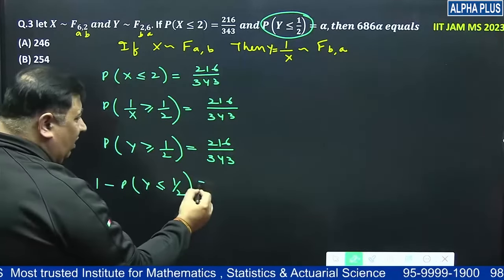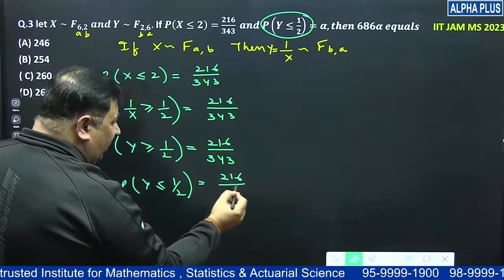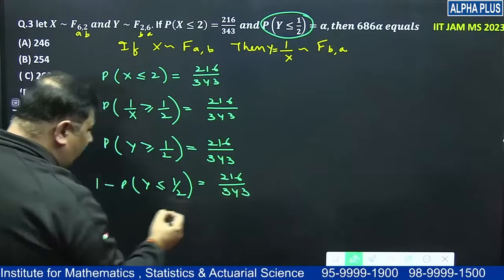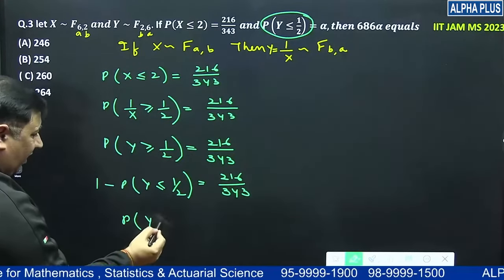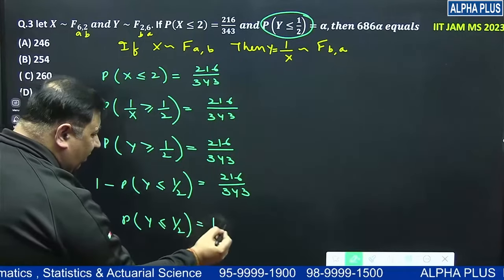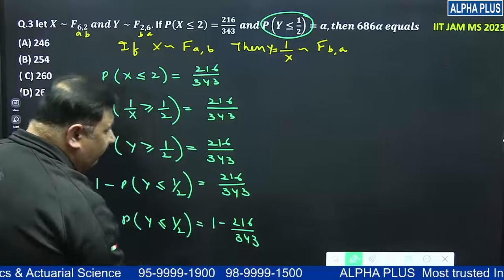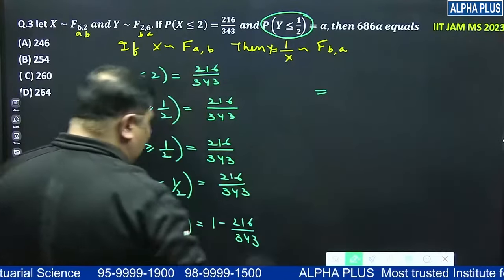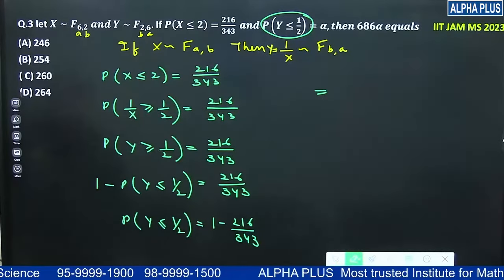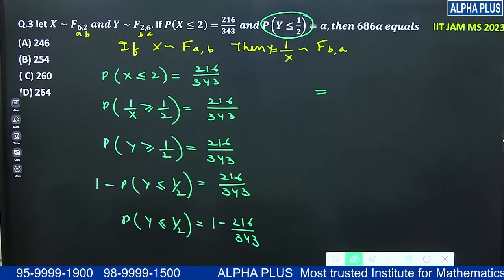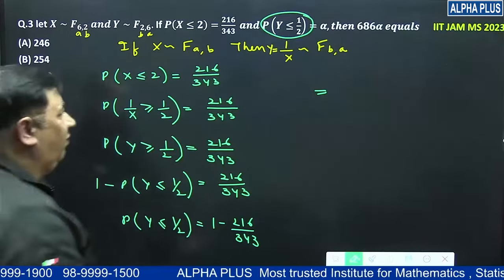So can we write probability Y less than equal to half is equal to 1 minus 216 upon 343. So you solve this 343, 1 minus 216, your answer will be 127 upon 343.